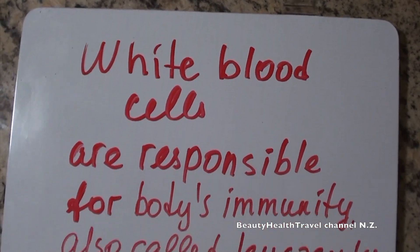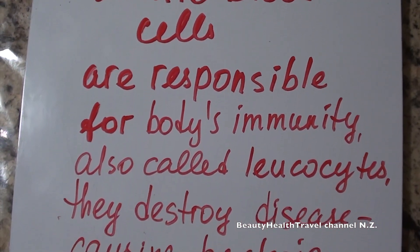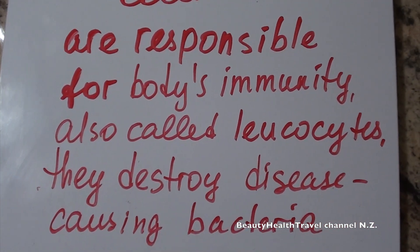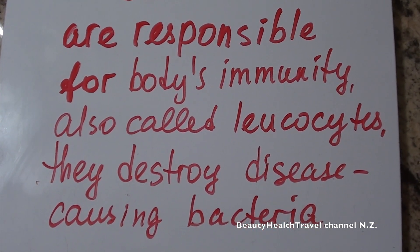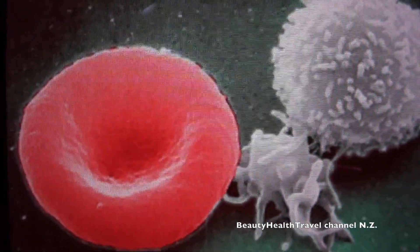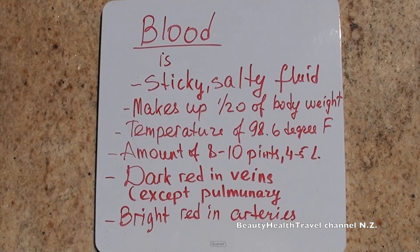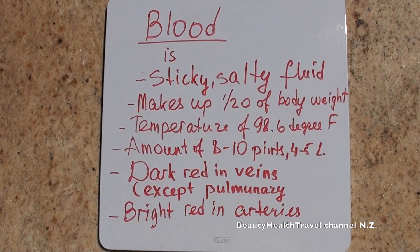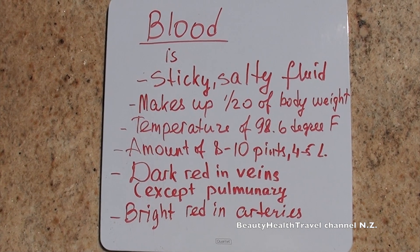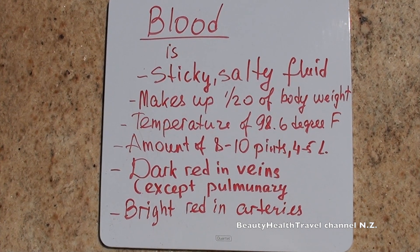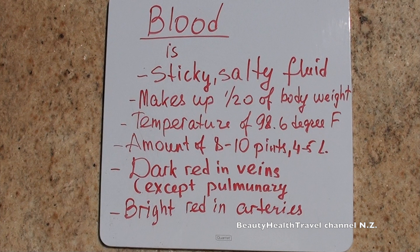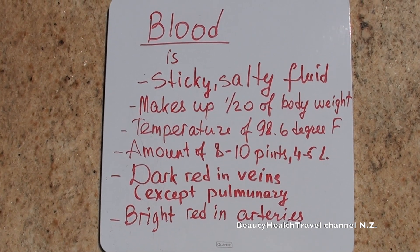White blood cells, also called leukocytes, are responsible for the body's immunity and destroy disease-causing bacteria. Blood is a sticky, salty fluid with a temperature of 98.6 degrees Fahrenheit and an amount of 8 to 10 pints (4 to 5 liters). It is dark red in veins (except pulmonary) and bright red in arteries.